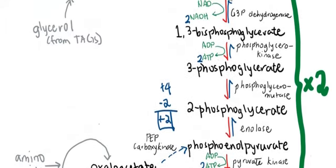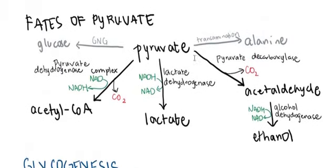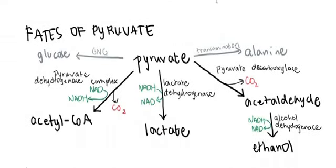When pyruvate is produced, it can have many fates. Pyruvate can go back to glucose via gluconeogenesis. Later in the discussion, transamination allows pyruvate to become the amino acid alanine, related to how your body manages nitrogen balance. But as a standalone topic, there are three main fates of pyruvate. First, in humans in the aerobic state, pyruvate becomes acetyl-CoA, aided by the pyruvate dehydrogenase complex, yielding one NADH and one CO₂.